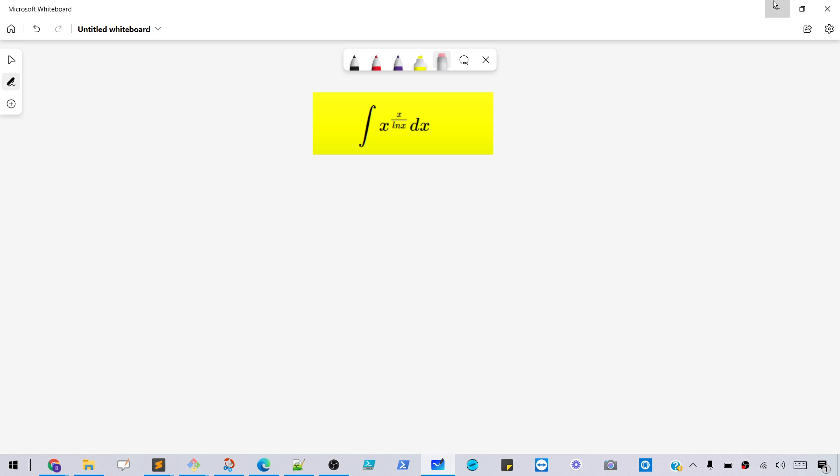And the first thing I want to do is look at a very useful trick. Let's just say we have some number a or a variable or anything a. This is the same thing as e to the ln of a.